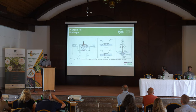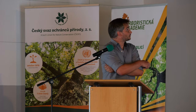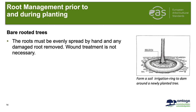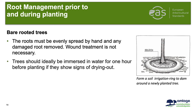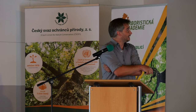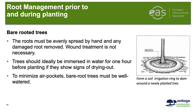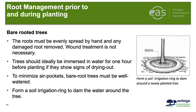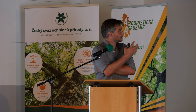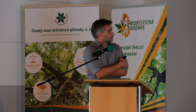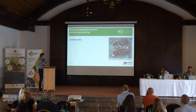For bare root trees, roots must be evenly spread by hand and any damaged roots removed. Wound treatment is not necessary. Trees should ideally be watered for one hour before planting. To minimize air pockets, bare roots must be well watered as the soil is worked around the roots. Form a soil irrigation ring — a water dam — around the tree.